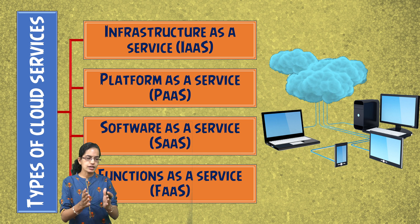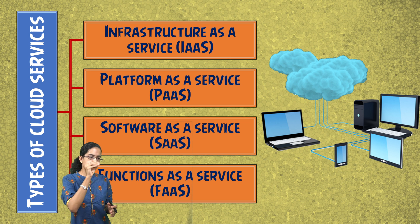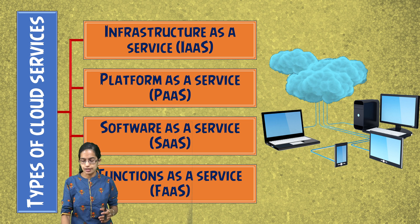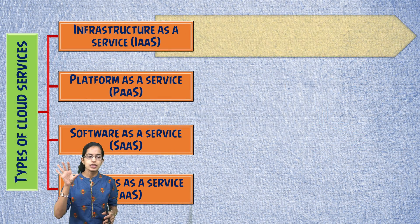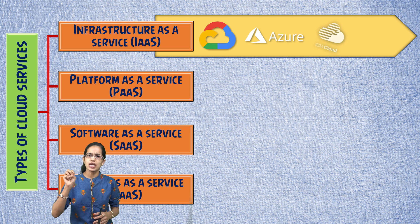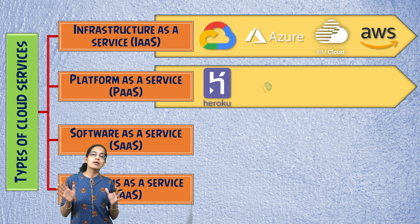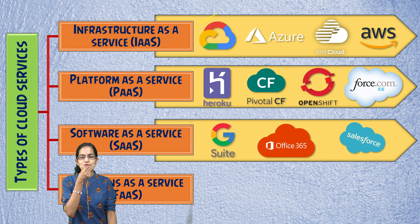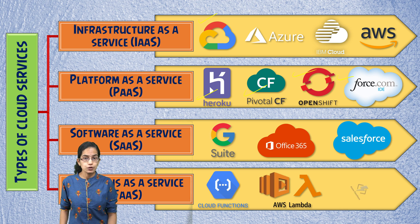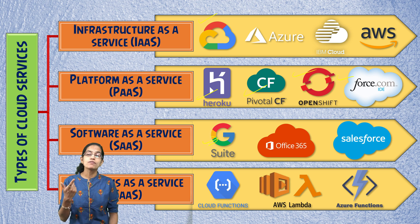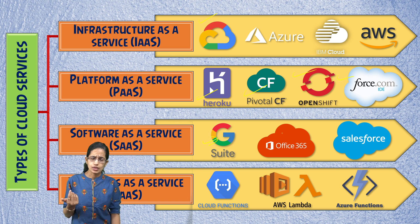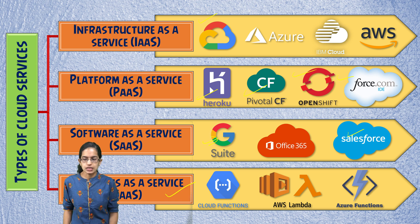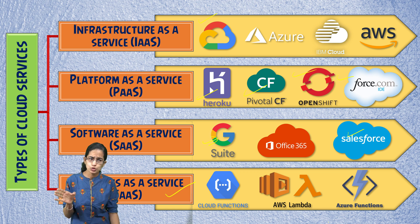Looking at examples for each service type: Infrastructure as a Service includes Google Cloud, Azure, IBM, and AWS (Amazon Web Services). For Platform as a Service, we have OpenShift, Force, Pivotal, and Heroku. Software as a Service examples include Google Suite, Office 365 with its various Office applications, and Salesforce. For Function as a Service, AWS Lambda, Azure Functions, and Cloud Functions are good examples.